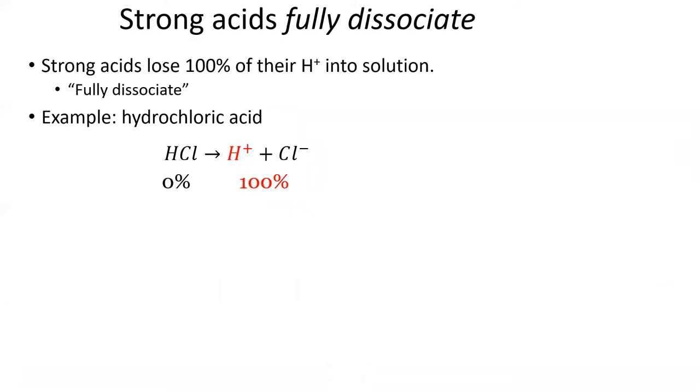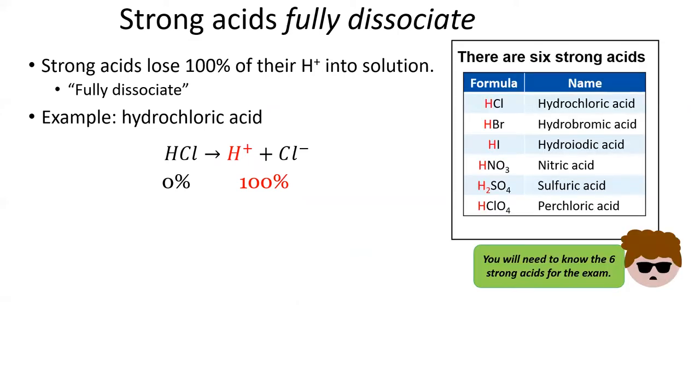Chemists have two broad categories of acids. Strong acids are strong electrolytes. They fully dissociate. That is, they deposit all of their H+ ions into solution. There are six strong acids common in chemistry. You will need to know all six strong acids in this class.